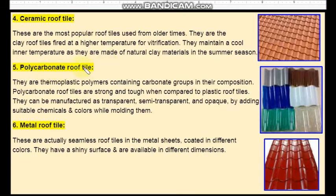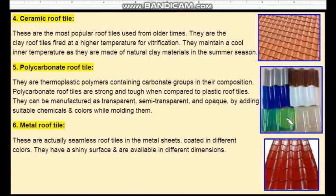Fifth one is polycarbonate roof tiles. They are thermoplastic polymers containing carbonate groups in the composition. Polycarbonate roof tiles are strong and tough when compared to plastic roof tiles. They can be manufactured as transparent, semi-transparent, or opaque. Just by adding suitable chemicals and colours, you can mould them in required shapes, colours, and varying transparency levels.